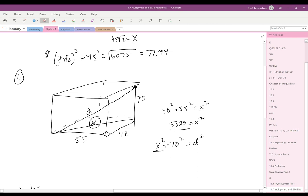But x squared is just 5329, right? The square root of 5329 squared. So, it's just 5329, so you get 5329 plus 4900 equals that diagonal squared. So, we add 4900. We then take the square root of that, and we get 101.14 equals d. We take the square root of both sides here, and we get 101.14 is the length of that diagonal.